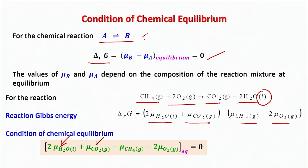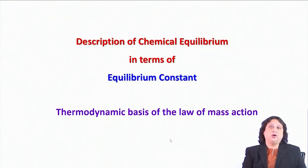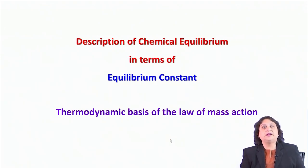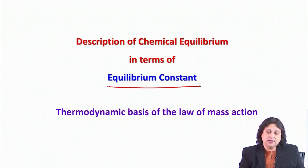If you know the chemical potential of water, carbon dioxide, methane, and oxygen at the equilibrium composition, you can express the condition of equilibrium. But let me highlight that calculating μ for an interacting system is not easy. So let us derive the chemical equilibrium condition in terms of something more useful — this brings us to the thermodynamic basis of the law of mass action, where we generalize these concepts to introduce the equilibrium constant.